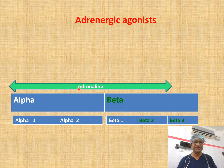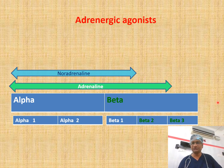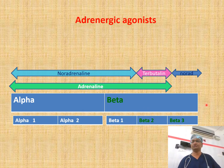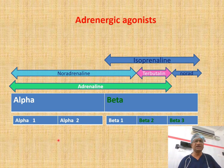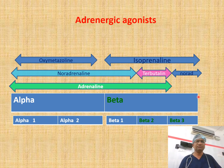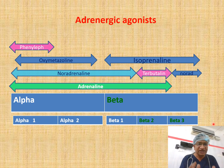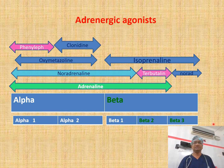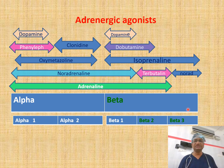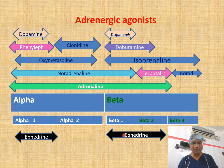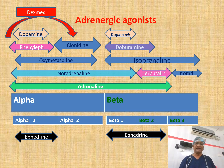Looking at the adrenergic receptor spectrum: adrenaline acts on beta, alpha-1, and alpha-2. Noradrenaline has no action on beta-2. Terbutaline and salbutamol have more action on beta-2. Isoprenaline has no action on alpha-1 — it is predominantly beta. Oxymetazoline, which we give as nasal drops, is predominantly alpha. Phenylephrine is predominantly alpha-1. Dopamine acts on beta-1 and beta-2 as well as alpha-1. Dexmedetomidine sits as a highly specific alpha-2 agonist.